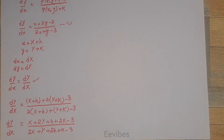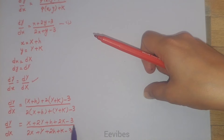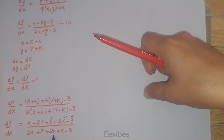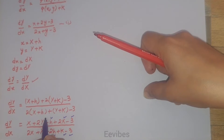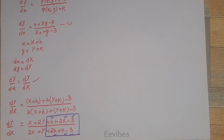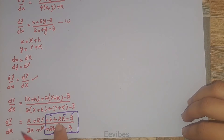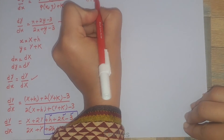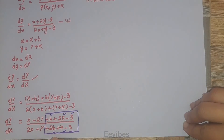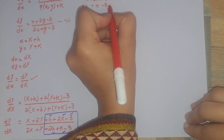My task is to convert this into the homogeneous form. The terms h + 2k − 3 in the numerator and 2h + k − 3 in the denominator are constants we need to eliminate. If these two constant parts are zero, the equation will be converted into homogeneous form. So I need to set h + 2k − 3 = 0 and 2h + k − 3 = 0.